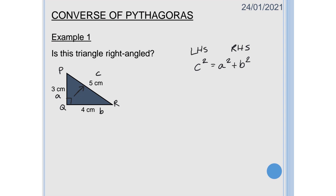So we'll start with the left hand side, we've got C squared. Well C squared, we've got a value for C of 5 so it's going to be 5 squared which is equal to 25.